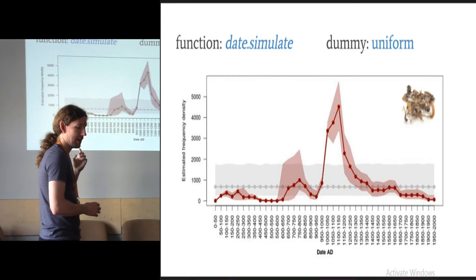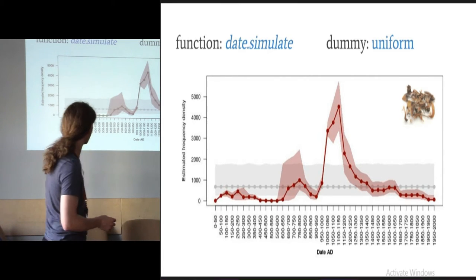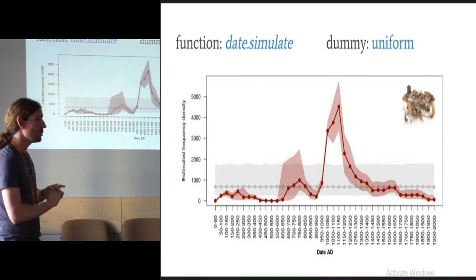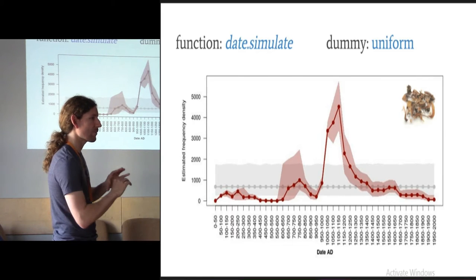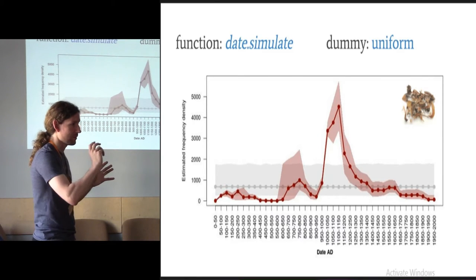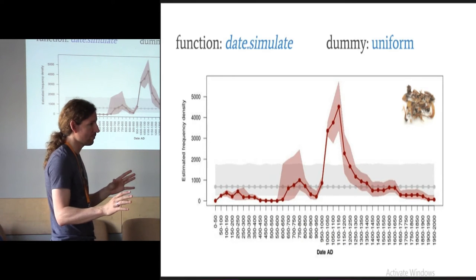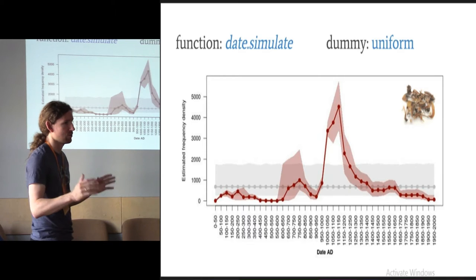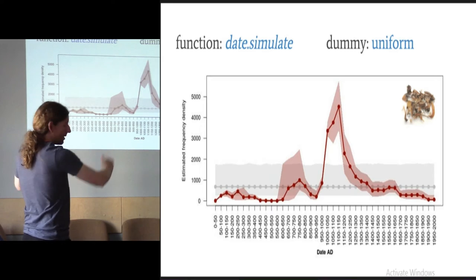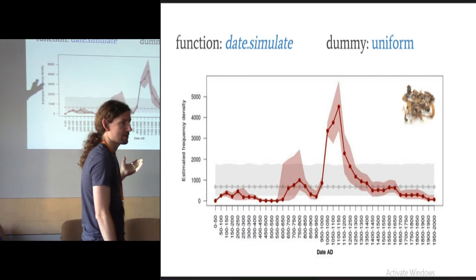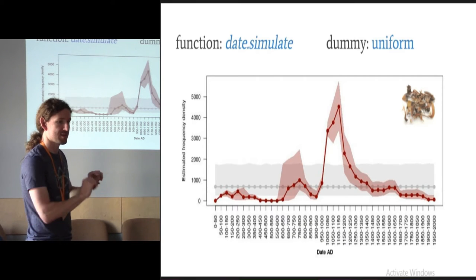None of this means anything unless you have some idea what variation you expect. So you can also run a dummy model, a null model. In this case, the grey band in the back is a uniform dummy. You tell it to take the same sample size, the same sample lumpiness in terms of numbers, weightings per context, but just ignore all the dating information and just simulate it as if everything was dated 0 to 2000 or whatever the date range of your study is. How much variation would you expect by chance? And that's that band at the back. Of course, you wouldn't actually expect this. That would be a ridiculous null hypothesis that the amount of fish bones excavated from London are time-independent.